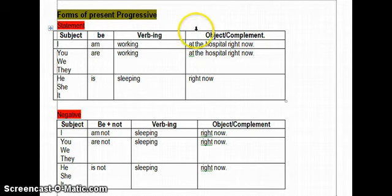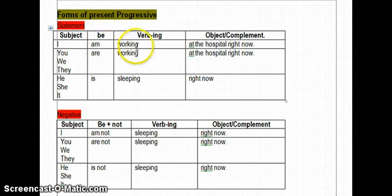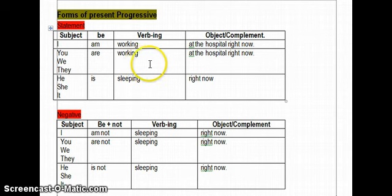Now let's see the form of present progressive. Present progressive is used to express activities in progress at the time of speaking — untuk mengungkapkan aktivitas yang sedang berlangsung. For the statement: subject + be + verb-ing, then object and complement. If the subject is I, use 'am': 'I am working at the hospital right now.' If the subject is you, we, or they, use 'are' + verb-ing. If the subject is he, she, or it, use 'is' + verb-ing.